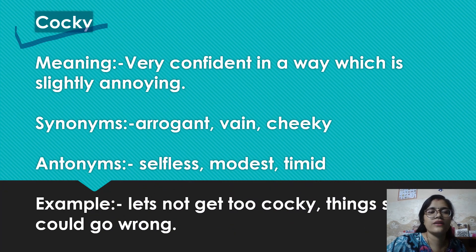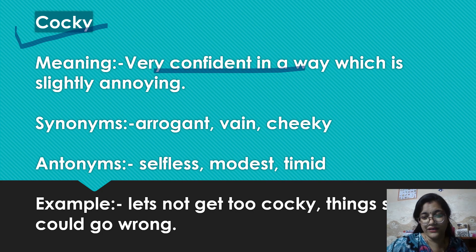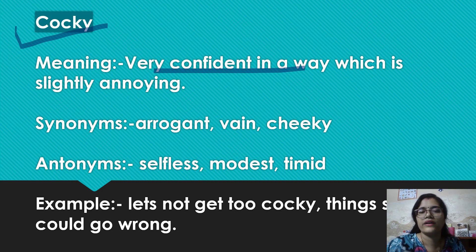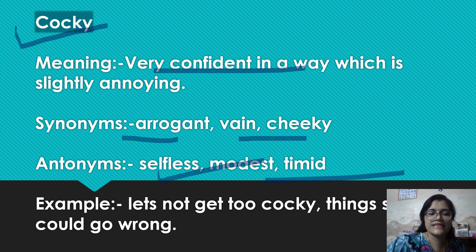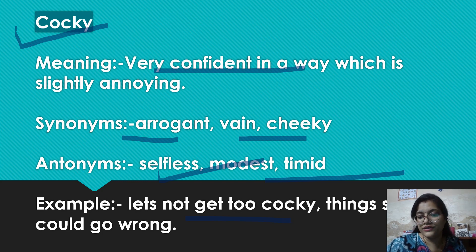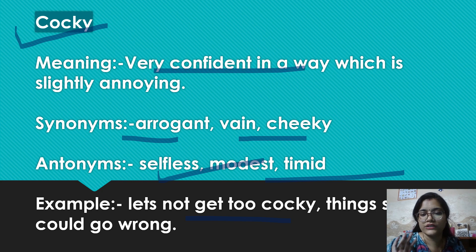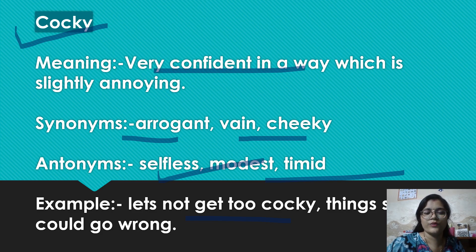Okay, next word we are going to talk about is cocky. So guys, cocky ka matlab hota hai: very confident in a way which is slightly annoying. I mean, ik aisa banda ya bandi who is very much confident in themselves, lekin jo thoda sa annoying ho jaata hai. Synonyms: arrogant, vain, cheeky. Antonyms: selfless, modest, timid. Example: Let's not get too cocky — things could go wrong even now. So jab aap kisi cheez ke liye bohut zyada confident ho jaate hain, you should know you should not get overconfident.